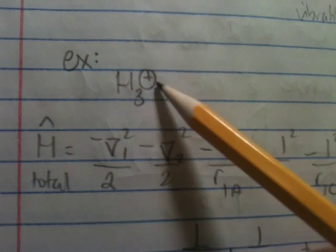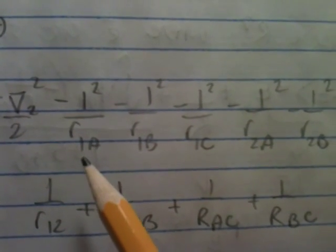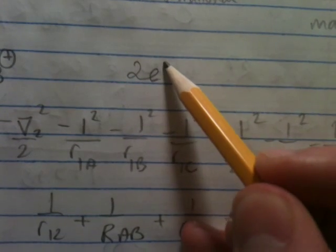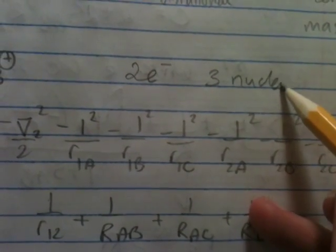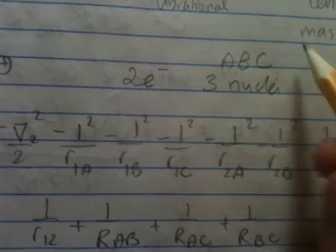is for H3+, why not? Here you have your kinetic energy terms, Laplacian, and then you have two electrons, and three nuclei to play with. We'll call them ABC, because I like simple terms.